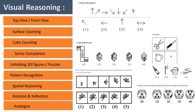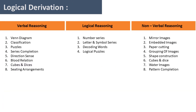Discussing about visual reasoning — you should be able to understand and reconstruct 2D and 3D compositions. You have to understand the top view, front view, side views, side elevations, surface counting, cube counting, series completion, and unfolding 3D figures. Questions will be asked about the rotations of figures or the completion of a series, and then there are analogies. Coming to logical derivation, it has verbal reasoning, non-verbal reasoning, and logical reasoning.